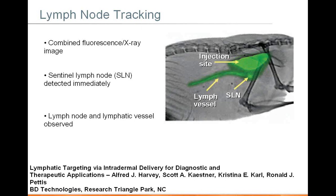One of the most common applications of ICG is to look at regional lymph nodes. If you're studying a small animal model for tumor surgery, surgeons often want to understand what the regional draining lymph nodes are, and you can use ICG to model this quite nicely. If you inject ICG at a particular site, you can quite easily visualize the lymph nodes and track the lymphatic vessels. Because we're working in the near-infrared, there's not a lot of background, and by co-registering with x-ray you have additional anatomical landmarks to locate those lymph nodes.